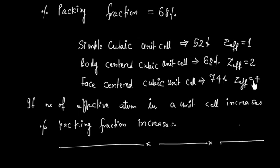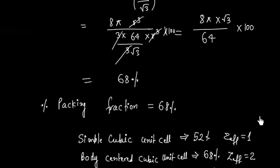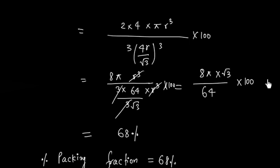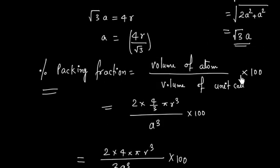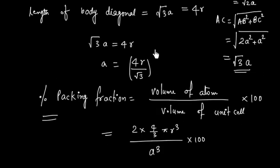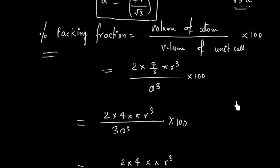This problem illustrates the calculation of percentage packing fraction in a BCC unit cell. The one important result to remember is the relationship between A and R: A equals 4R by root 3, and Z effective in a BCC lattice is 2.